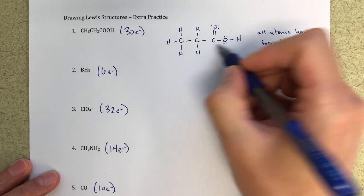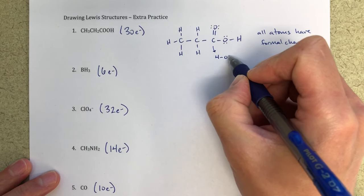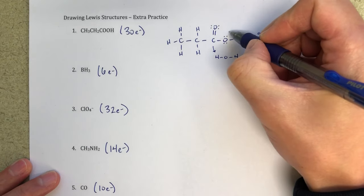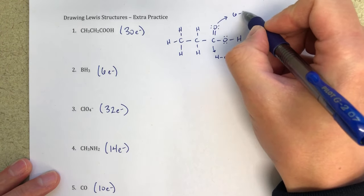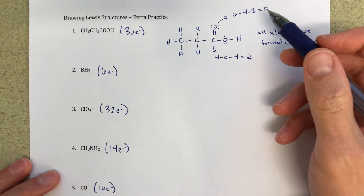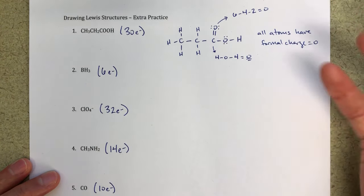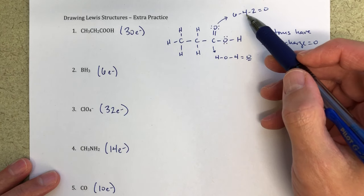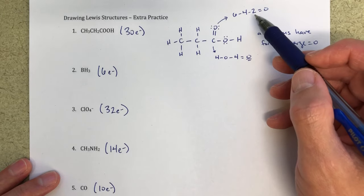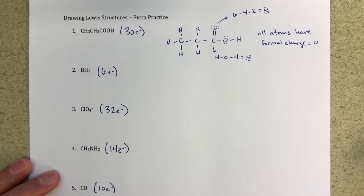To calculate formal charge, I use: valence electrons minus lone pair electrons minus number of bonds. For the carbon here: four minus zero minus four equals zero. For oxygen: six minus four minus two equals zero. You may have a slightly different method if you're not in my class, but you'll get the same result. In this Lewis dot structure, all atoms have formal charges of zero.